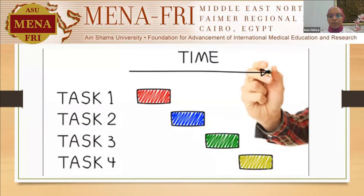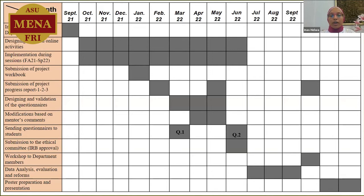My timeline is shown in this Gantt chart. I started my project a little bit early — the soft opening was in September when I introduced my project to my department members. During the fall semester, fall 21 and spring 22, I was both designing the assigned online activities, along with my colleagues, and implementing the actual approach during the lecture sessions.